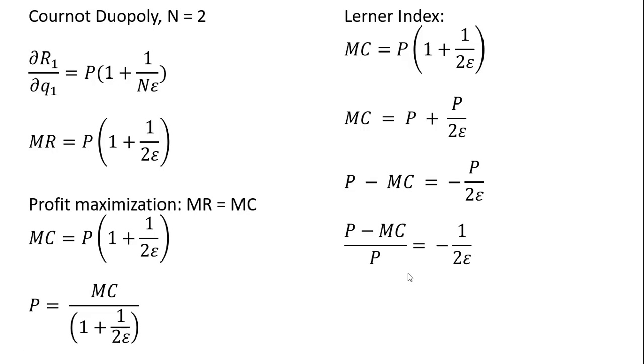This is the Lerner Index for a Cournot duopoly: (P - MC)/P = -1/(2ε). The only difference from a monopoly Lerner Index is this 2 here. With a monopoly, this 2 would just be 1.